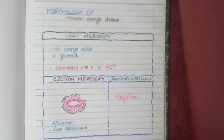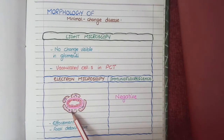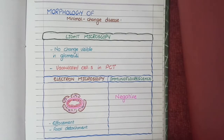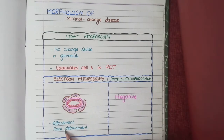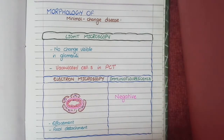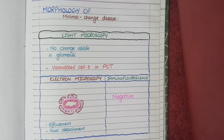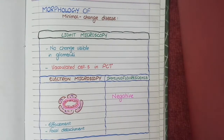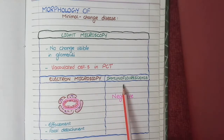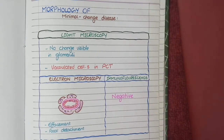On electron microscopy, the key finding is effacement of foot processes — the surface of podocytes, which normally has foot-like projections, is flattened due to podocyte injury. You may also see focal detachment of some podocytes from their location. As for immunofluorescence, the result is negative for any antibody or complement proteins, because minimal change disease is not caused by antigen-antibody complexes or complement proteins, but rather by circulating serum factors. Therefore immunohistochemical staining is negative — an important point to remember.